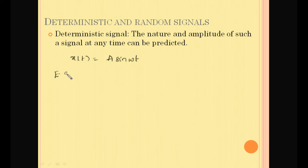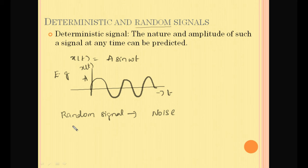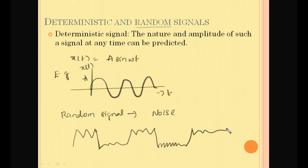A·sin(ωt) is represented as a smooth sinusoidal waveform with amplitude A. Whereas if a signal's value is unpredictable, irregular, and cannot be characterized mathematically, such signals are called random signals. An example is thermal noise in an electrical circuit. Such an irregular signal whose value at any time instant is unpredictable is called a random signal.